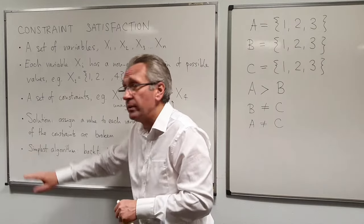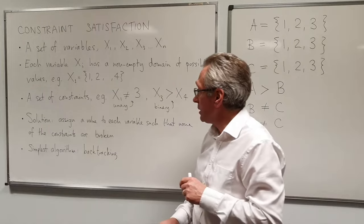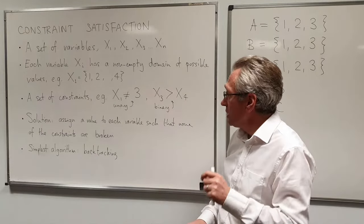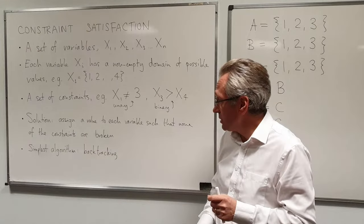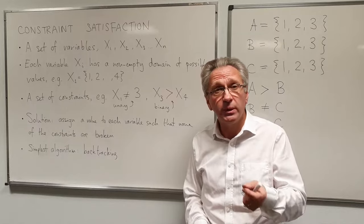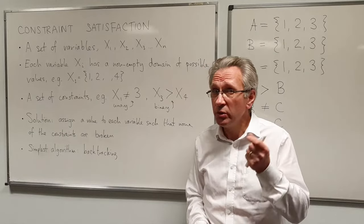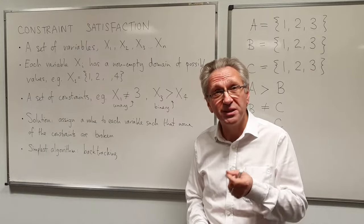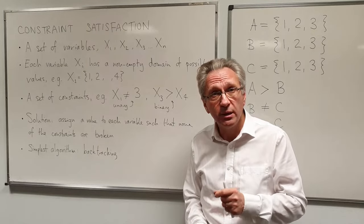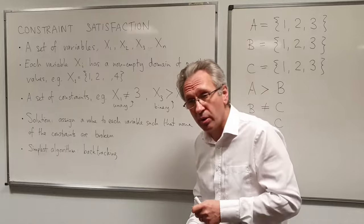So what we're looking for is a solution. A solution assigns a value to each variable such that none of the constraints are broken. The simplest algorithm that we can use to solve the problem, not the best algorithm but the simplest, is known as backtracking. And I'm going to illustrate that process on this problem here.